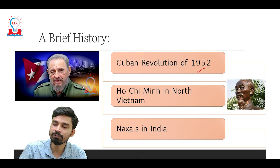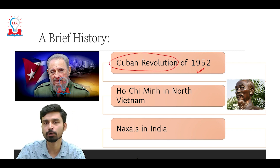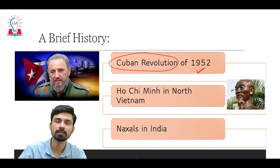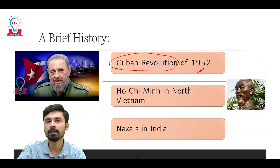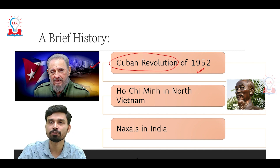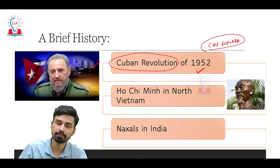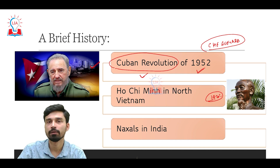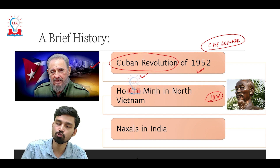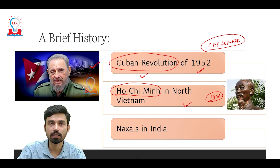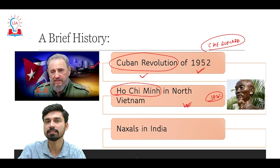Moving closer to our time, in 1952 we see the success of guerrilla warfare during the Cuban Revolution. The Cuban Revolution was a revolution against the existing government of Cuba, which was largely believed to be a puppet government of the United States. Cuban leader Fidel Castro, along with communist revolutionary Che Guevara, waged guerrilla warfare against the government led by Batista and overthrew it. In the 1970s, communist leader Ho Chi Minh's forces used guerrilla tactics against the USA in Vietnam, eventually forcing American forces to withdraw without attaining any significant result.